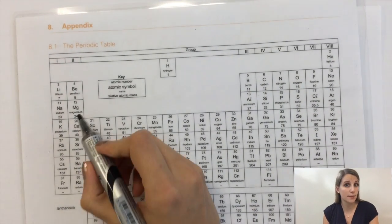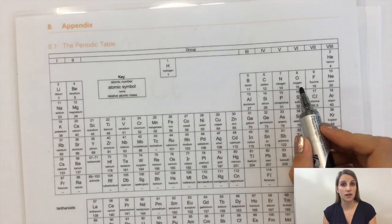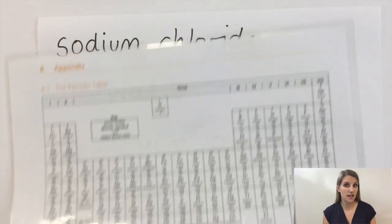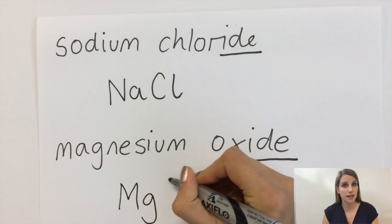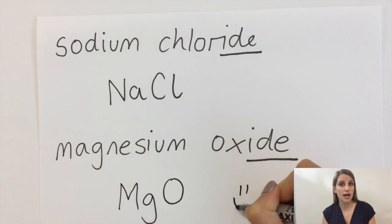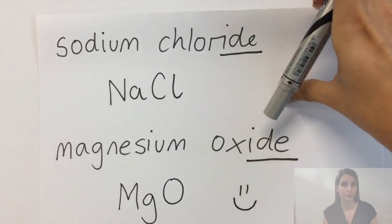The same thing happens with magnesium oxide in that the magnesium is on the left-hand side, the oxygen is on the right. If I put those two elements together, that makes magnesium oxide or MgO.